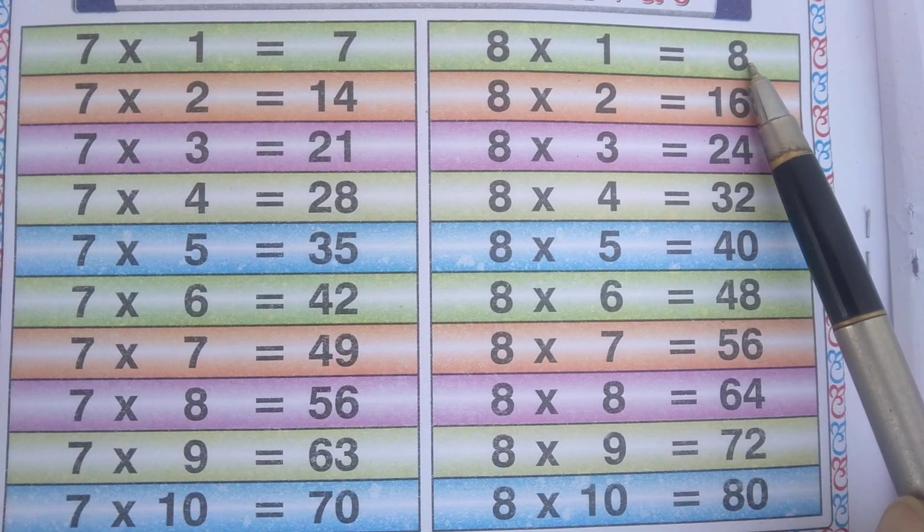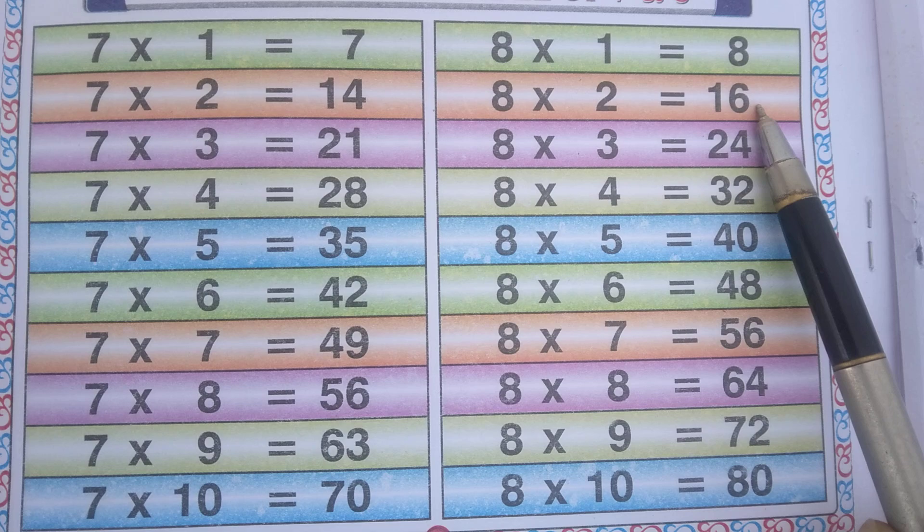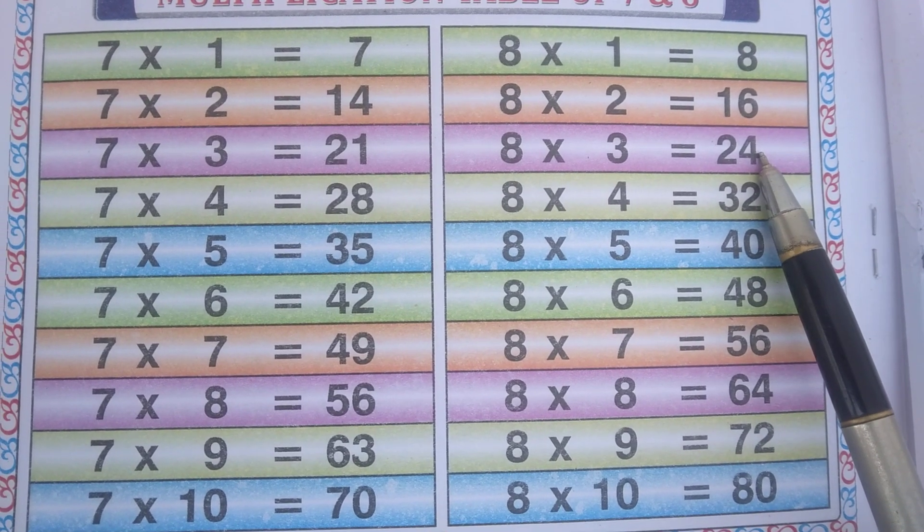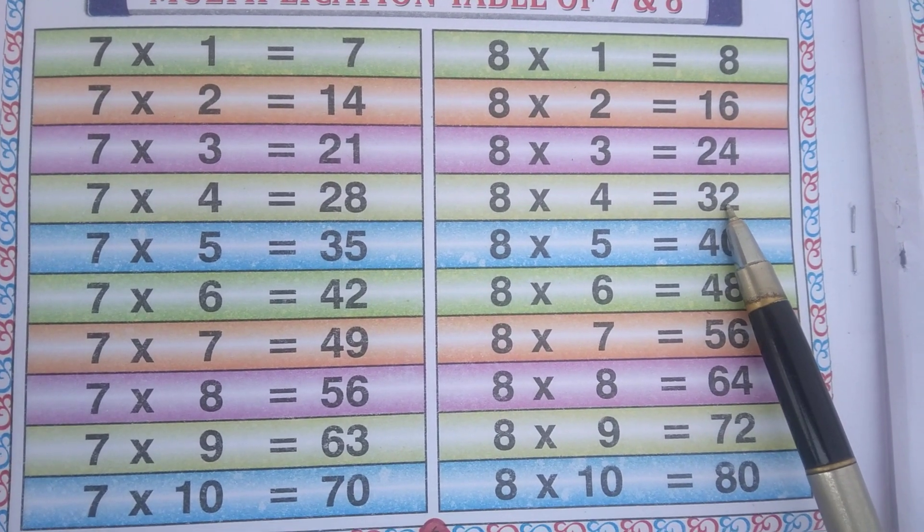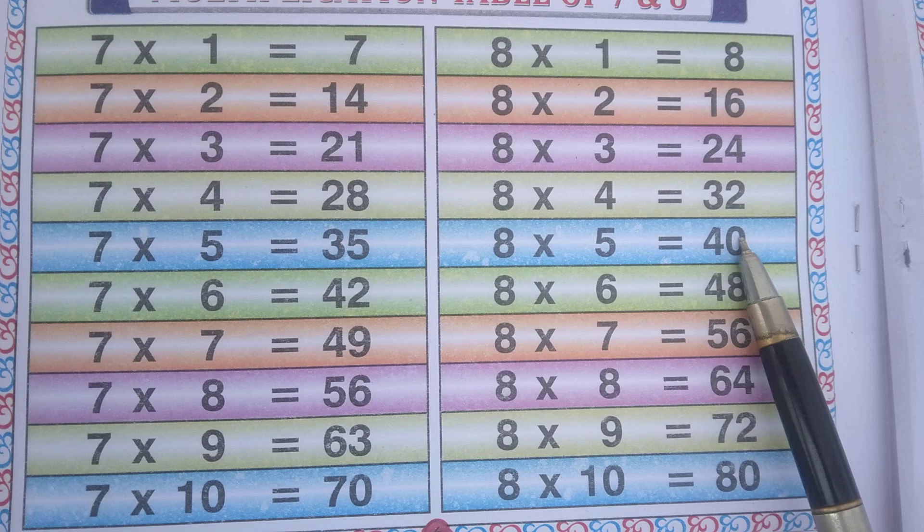8 1s are 8, 8 2s are 16, 8 3s are 24, 8 4s are 32, 8 5s are 40,